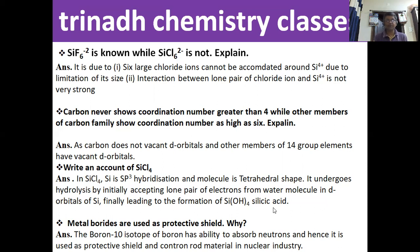In Group 14 elements, one important comparison: CCl4 (carbon tetrachloride) does not undergo hydrolysis, whereas SiCl4 (silicon tetrachloride) undergoes hydrolysis. The reason is due to the lack of vacant d-orbitals in carbon, whereas there is availability of vacant d-orbitals in SiCl4.